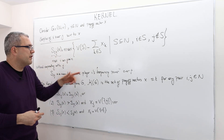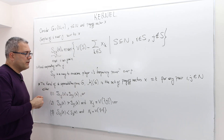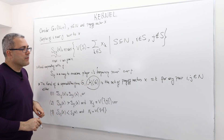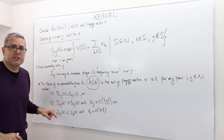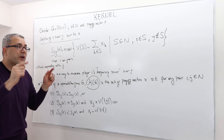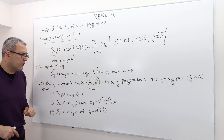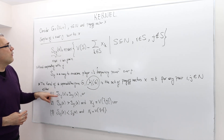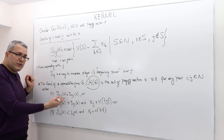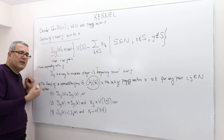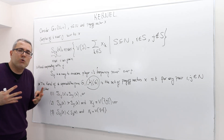s_ij measures player i's bargaining power over j. We define the kernel of a super-additive game G, denoted by a script K, as the set of payoff vectors x such that for any pair of players i and j, one of the following conditions must be true. Condition one: the surplus of player i over j with respect to x equals the surplus of player j over i with respect to x — meaning they have equal bargaining powers.